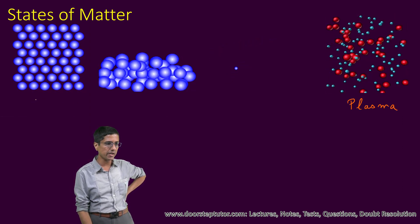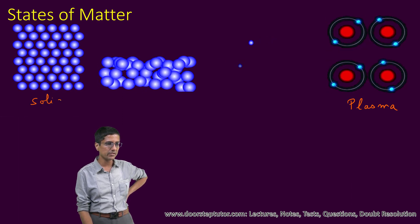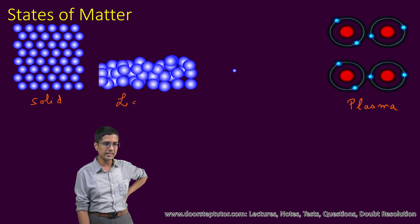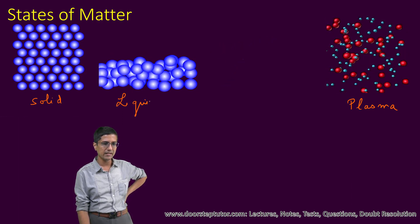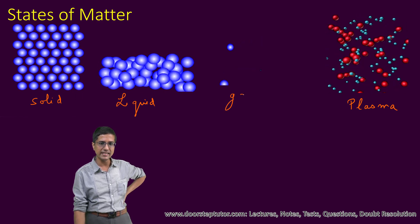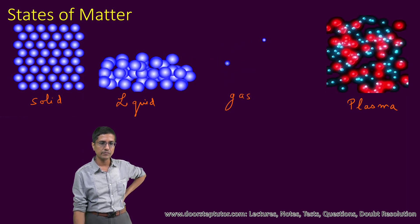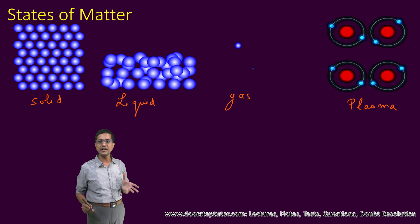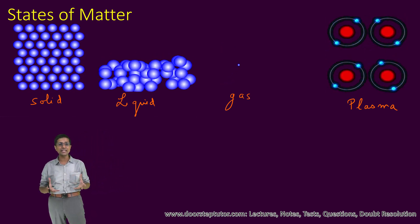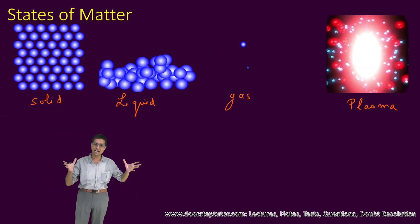These three states you might already know: the solid state, the liquid state, and the gaseous state. Solid, liquid, and gas are the three states of matter that we see in everyday life.